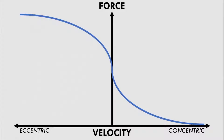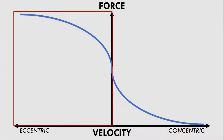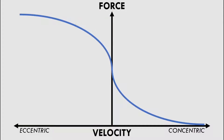The force velocity relationship has two parts: the concentric portion and the eccentric portion. While the relationship is essentially the same for both, it can be somewhat confusing to understand. Therefore, we will cover the concentric portion first, followed by the eccentric portion.